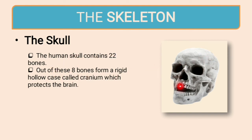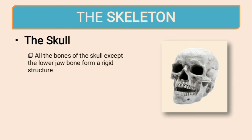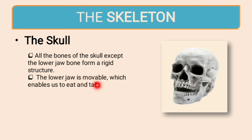The human skull contains 22 bones. Out of these, 8 bones form a rigid hollow case called the cranium, which protects the brain. The other 14 bones form the face and are called facial bones, which support the eyes, nose, and mouth. All the bones of the skull except the lower jaw form a rigid structure. The lower jaw is movable because it enables us to eat and talk.